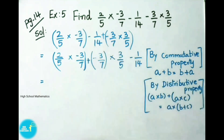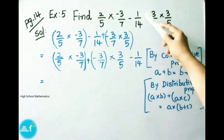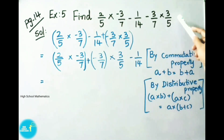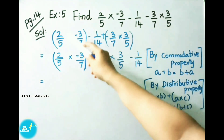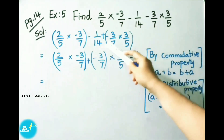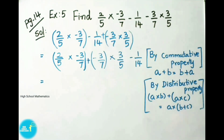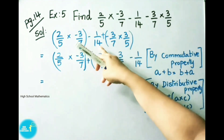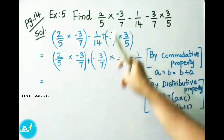See now, page number 14, example 5. Find 2 by 5 into minus 3 by 7 minus 1 by 14 minus 3 by 7 into 3 by 5. Let us see the solution. We have taken first two values as a group: 2 by 5 into minus 3 by 7. Next, we have taken minus 1 by 14. We wrote here extra plus of minus 3 by 7 into 3 by 5 as a group.